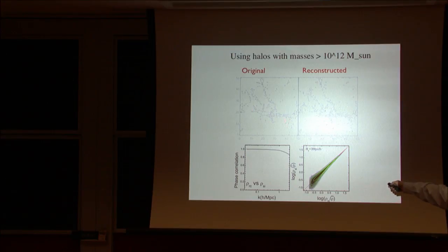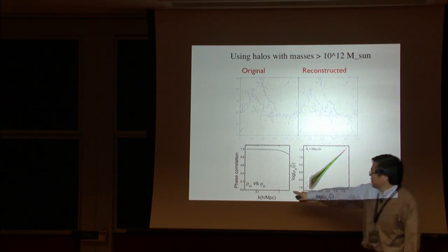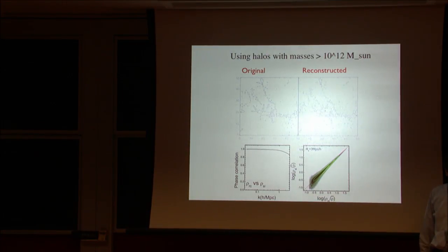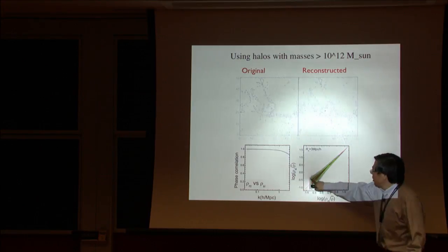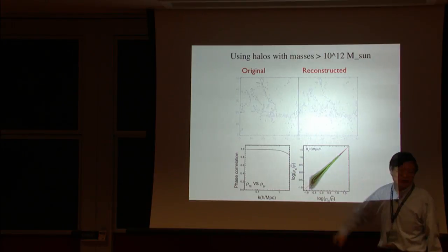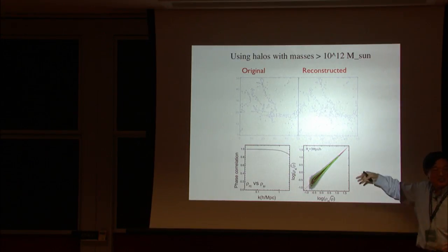So basically here, this is the original one. This is a reconstructed current density field. Quite good. Using halos above 10 to 12 solar mass. Look at the phase correlation. It's even better. One all the way to here. Look at this pixel-pixel density. Doing very well at high-dense region. That's because I know the halo very well, the profile. Here, slightly problem. That's because you miss low mass galaxies in the voids. If I go down to 10 to 11 solar mass, this will shrink. In principle, you can do that. But then you're constrained by the traces. So, so far so good, right?